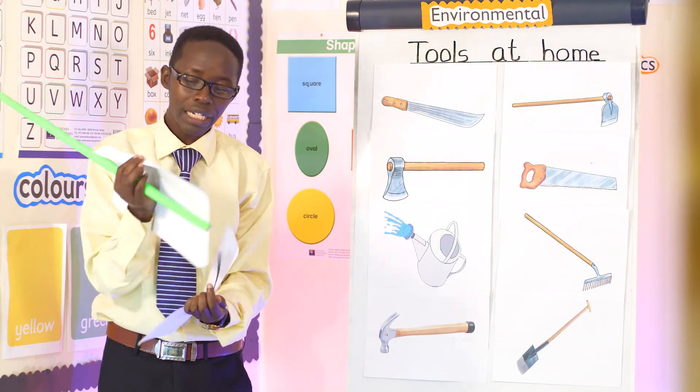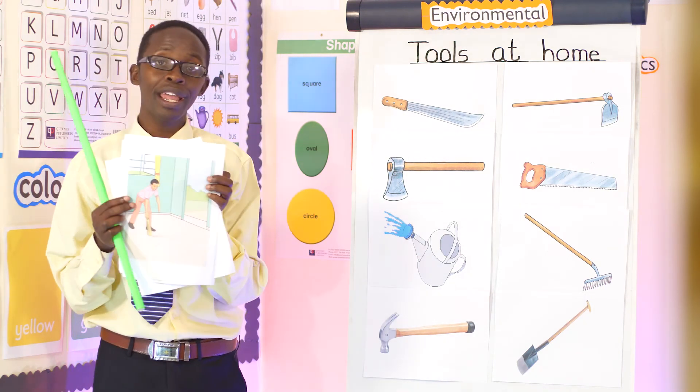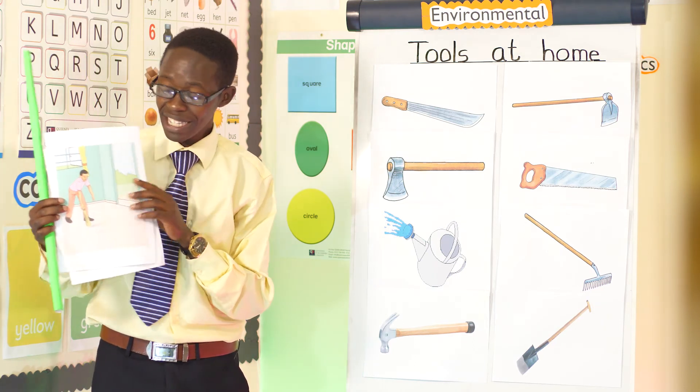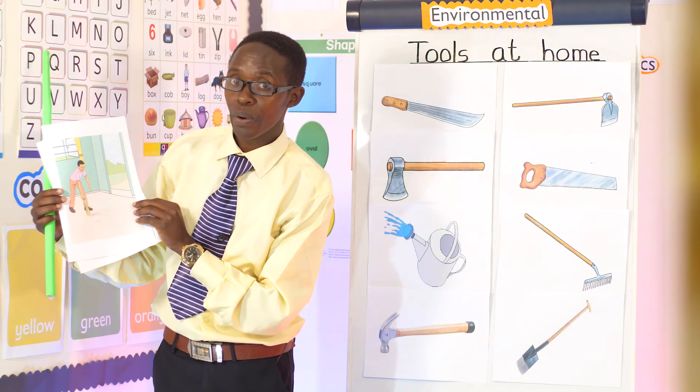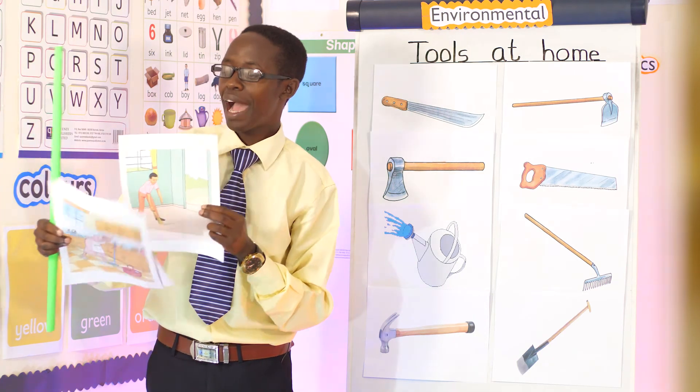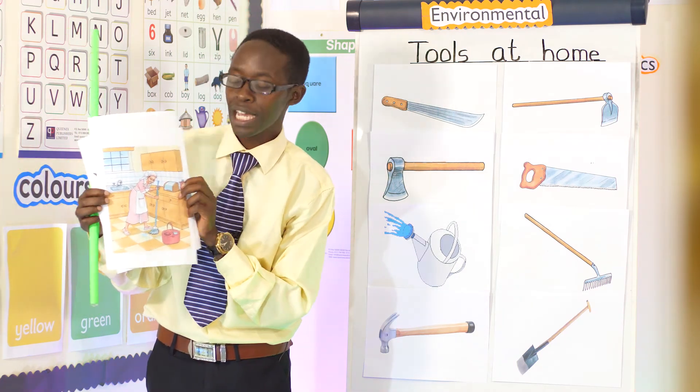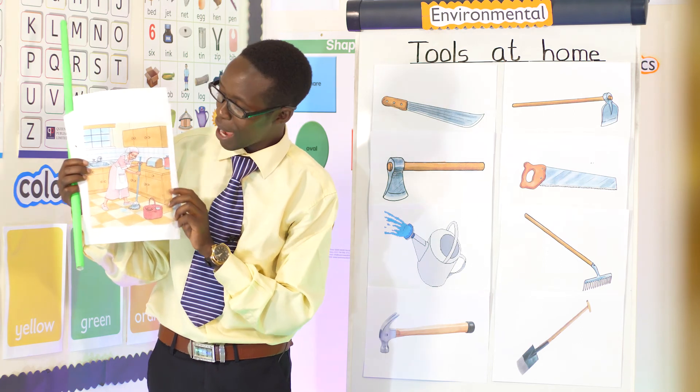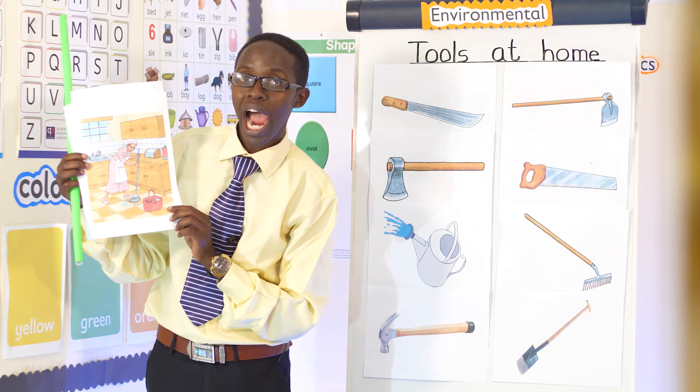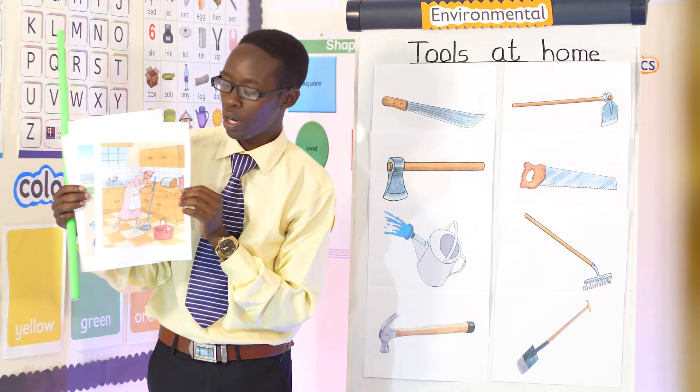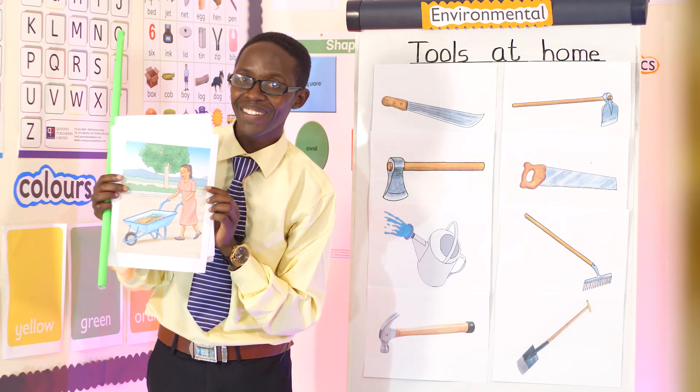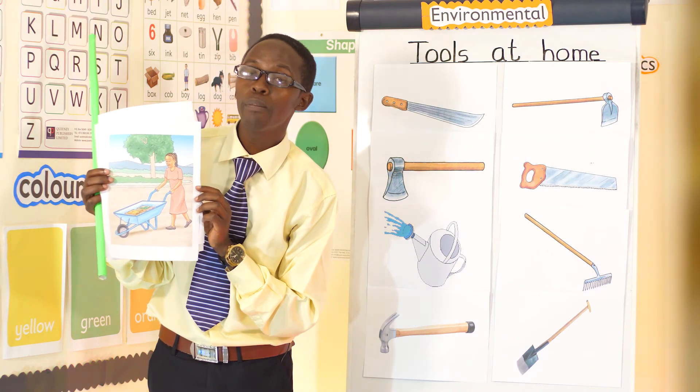Very good. Still you have something beautiful here. We have what? Yes, what is this boy doing? Using a broom cleaning the compound. Still you have something else. What is our auntie doing here, our mom? Mopping the house using a mop. Good. Another person here using what? A wheelbarrow.